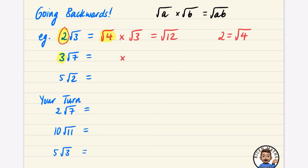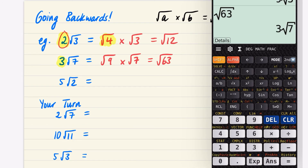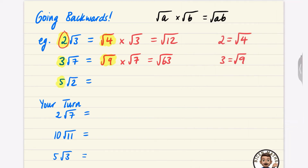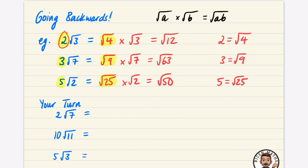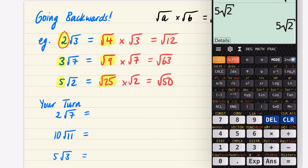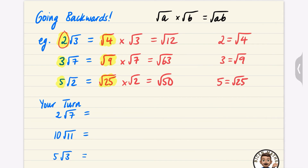Looking at 3√7: we write this as two things being multiplied. 3 is the same as √9, so 3√7 = √9 × √7 = √63. You can verify: √63 = 3√7. For 5√2: 5 is the same as √25, so 5√2 = √25 × √2 = √50. And indeed √50 = 5√2. This is the idea of going backwards with these questions.